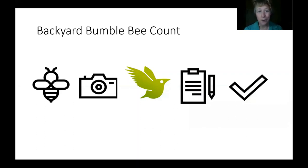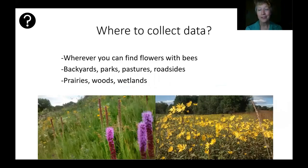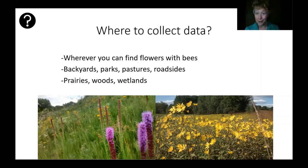To summarize, the first things you're going to do are learn some bumblebee species ID, learn some bumblebee photography tips, sign up for iNaturalist, join the project, collect data, and enter that data at iNaturalist. There are lots of options for where you can do this — pretty much any place you can find flowers with bees: your backyard, a local park, pasture, roadside, any place where you have permission to go. It's great if we can get a lot of different habitat types — prairies, woods, wetlands — so we can learn more about bumblebee abundances related to these different kinds of habitats.